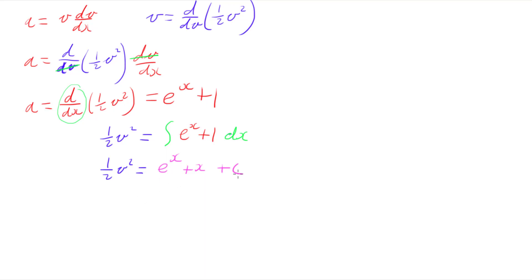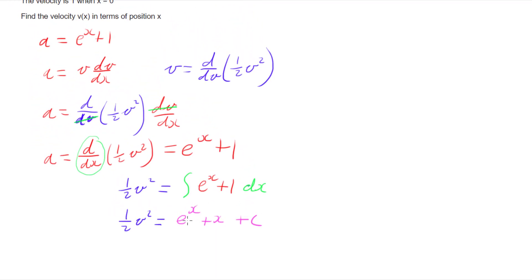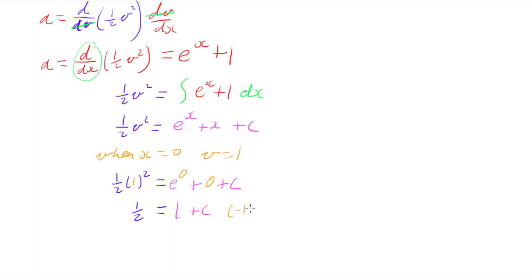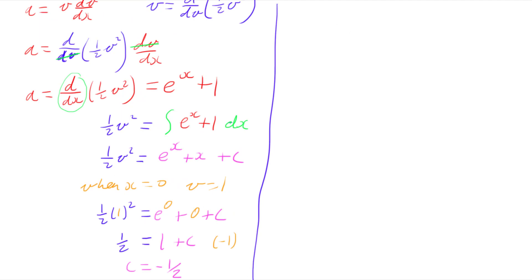Before rearranging, I'll deal with the constant using the initial conditions. We were told that velocity is 1 when x equals 0. Substituting in, I get a half of 1 squared equals e to the 0 plus 0 plus c. Since 1 squared is 1 and e to the 0 is 1, that gives us a half equals 1 plus c. Subtracting 1 from both sides gives c equals negative one half.